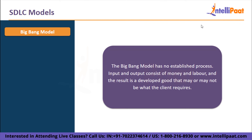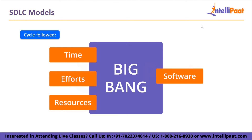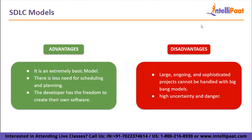Now we'll talk about the big bang model. The big bang model has no established process — input and output consist of money and labor, and the result is a developed product that may or may not be what the client requires. It doesn't need a lot of scheduling or planning; the developer analyzes requirements, writes the code, and creates the product based on their knowledge. This model is only applied to modest projects. The absence of a testing team and formal testing could lead to project failure. Advantages: it is an extremely basic model, there is less need for scheduling and planning, and the developer has freedom to create their own software. Disadvantages: large, ongoing, and sophisticated projects cannot be handled with it, and it is highly uncertain and dangerous.